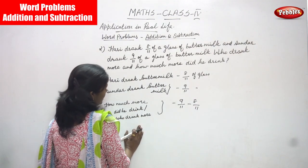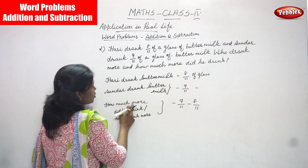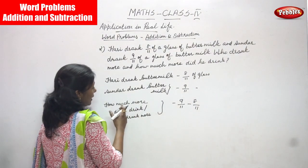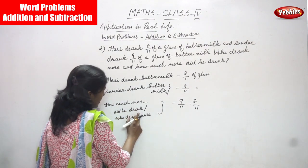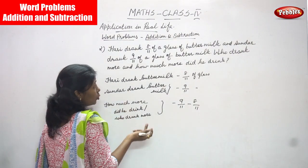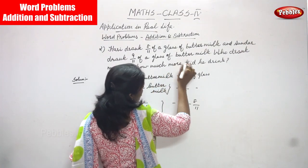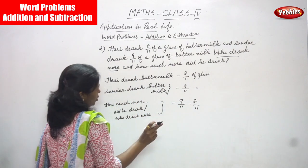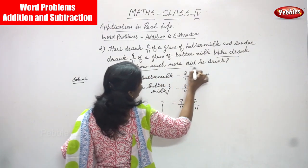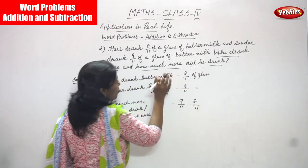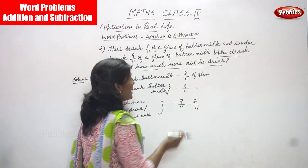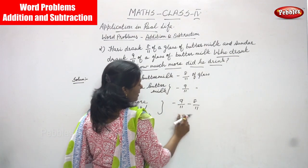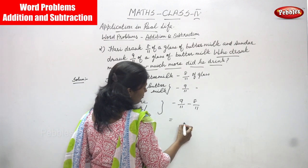The question asks us two things: who drank more, and how much more did he drink. 'How much more' means you have to subtract. That is nine by eleven minus eight by eleven. Look at the denominator — both denominators are the same.